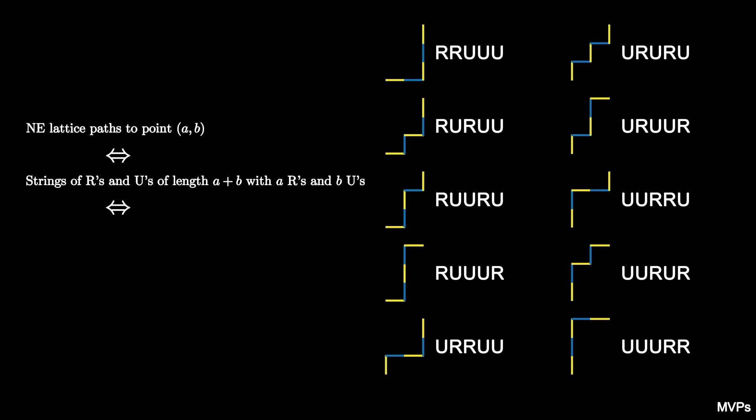Thus, such a lattice path corresponds to a selection of a unordered positions from a plus b spots to place the R's, and the U's go in the other spots. Hence, northeast lattice paths to (a,b) are counted by the binomial coefficient (a+b choose a).